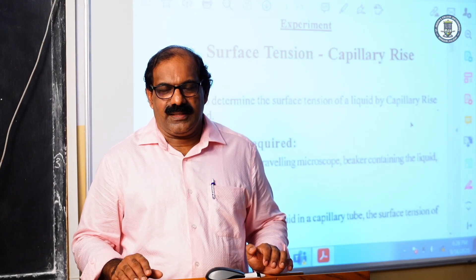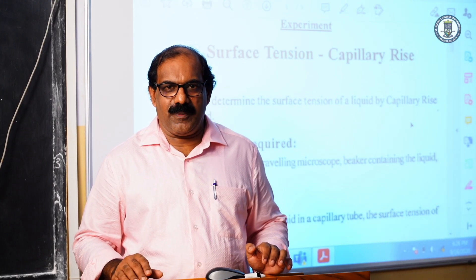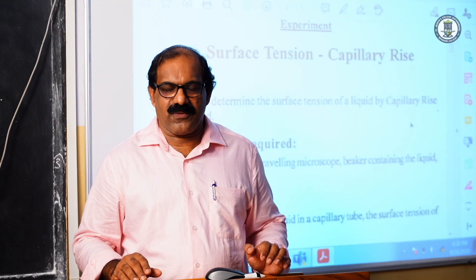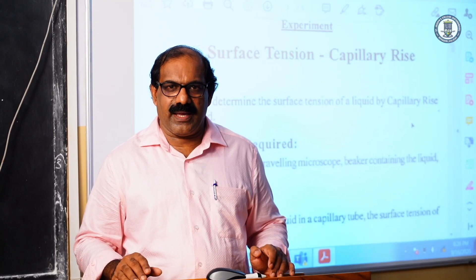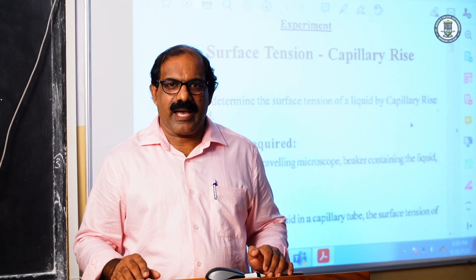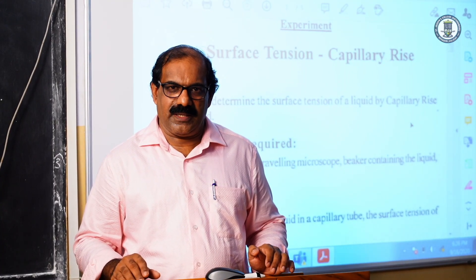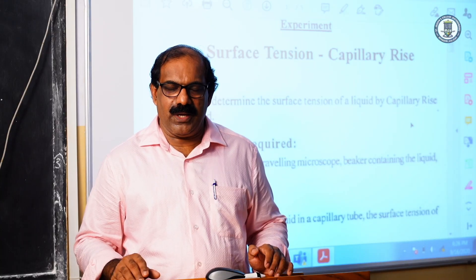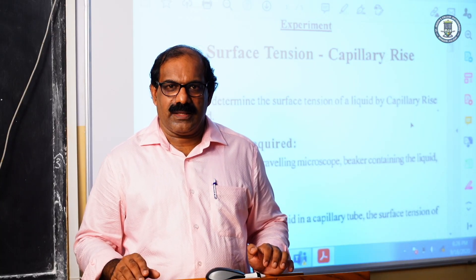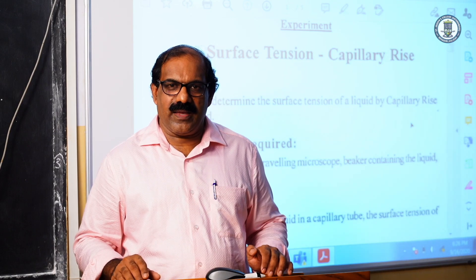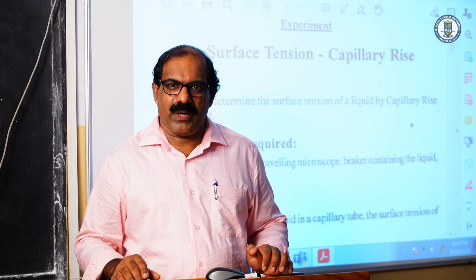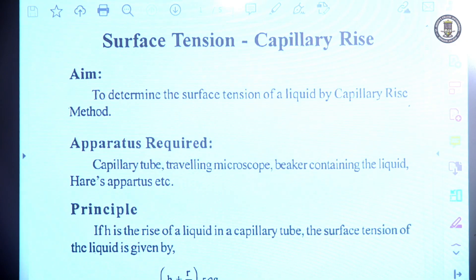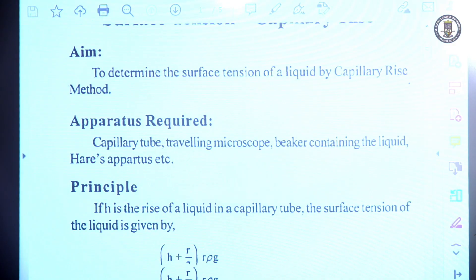Surface tension: the aim of our experiment is to determine the surface tension of a given liquid by the capillary rise method. We have been provided with a capillary tube, and the given liquid is there. In order to measure the capillary rise, we are using a traveling microscope.